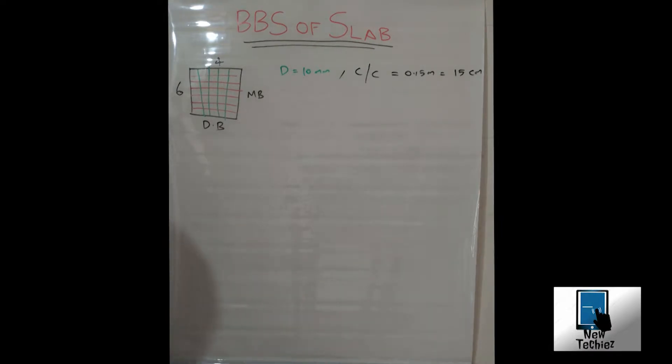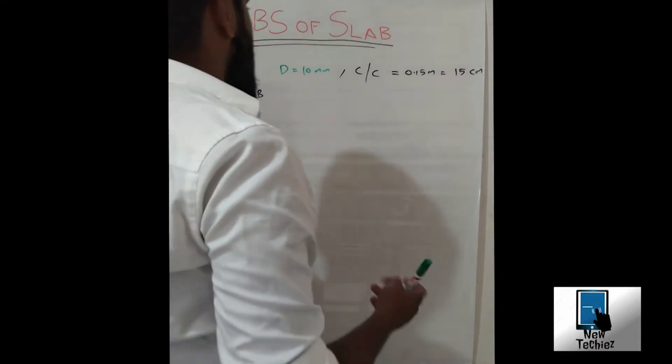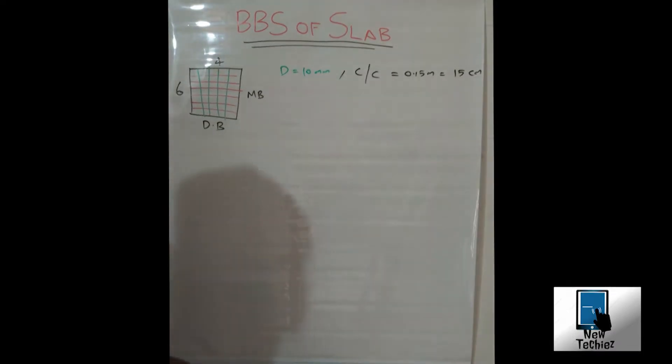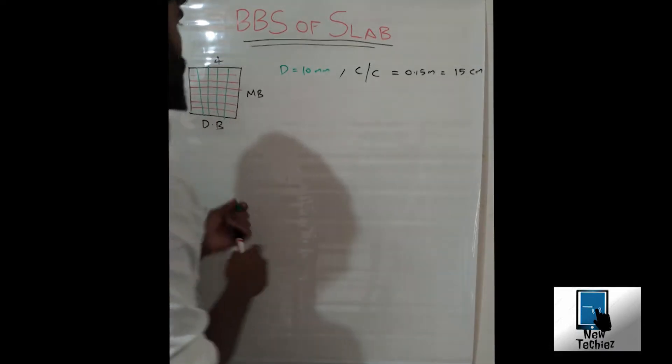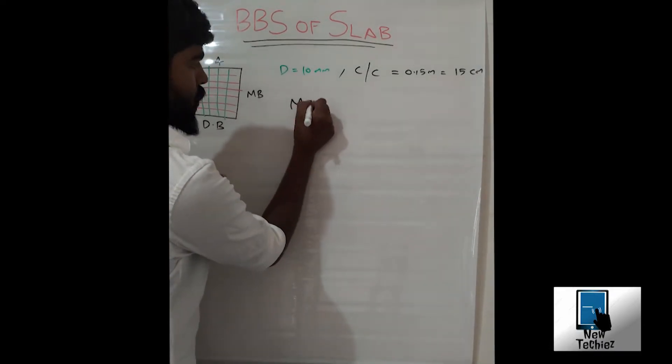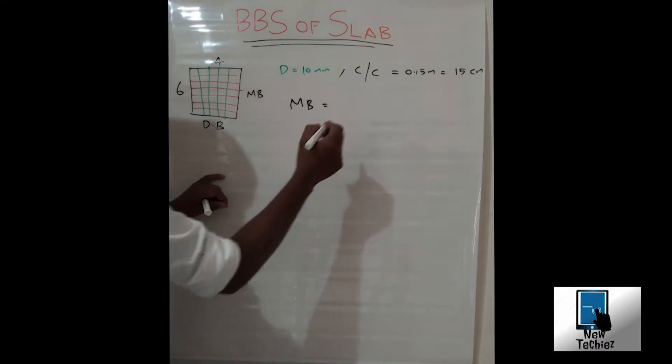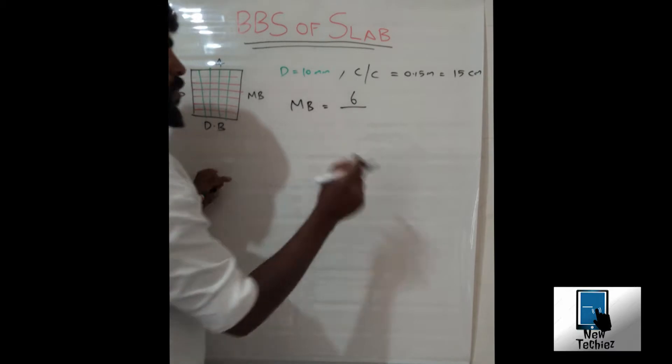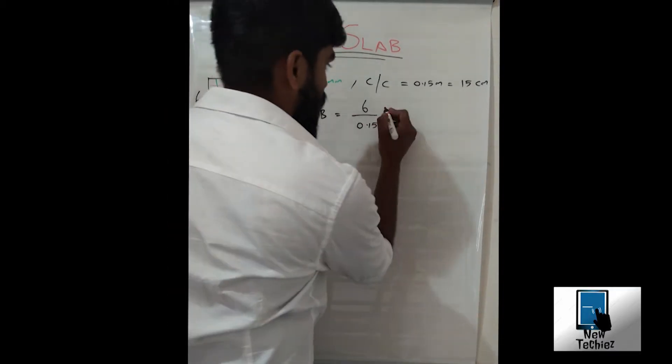Now we want to check how many numbers of main bar and distribution bar is required. First, for main bar, that is total length B, which is six meter wide, that is six divided by the center to center distance 0.15 meter plus one. By calculating this value we get 41 numbers.